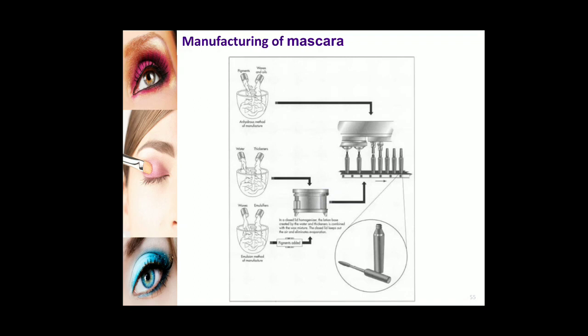In the manufacturing process of eye mascaras, the base, waxy materials, film forming agents, and other ingredients are mixed together and heated to a temperature where all waxy materials melt. They are mixed and homogenized to form a uniform mass. Then colouring pigments are added into the mixture and passed through the homogenizer to get a homogeneous mass, which is then filled into containers.